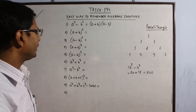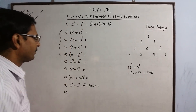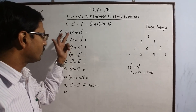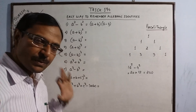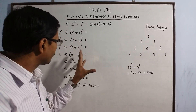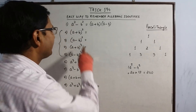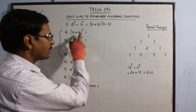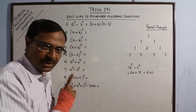Coming to the next set, the four identities A plus B whole square, A minus B whole square, A plus B whole cube, and A minus B whole cube can be very easily remembered through a small shortcut. In the first two identities the power is 2, and in the next two identities the power is 3.